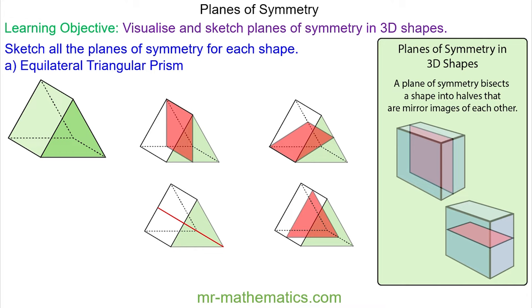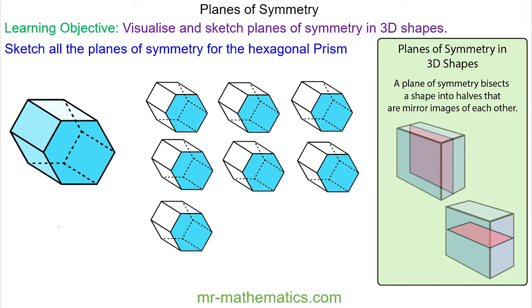Let's look at a hexagonal prism. Keeping to the same idea, we'll draw the lines of symmetry for the hexagonal face. We have a vertical line here. Again, we can make that into a plane of symmetry.